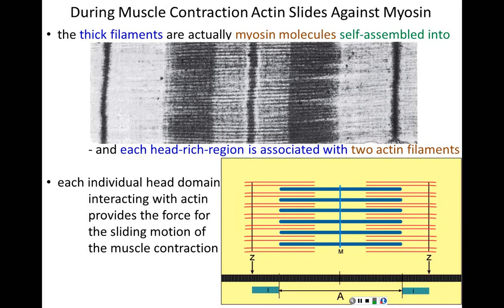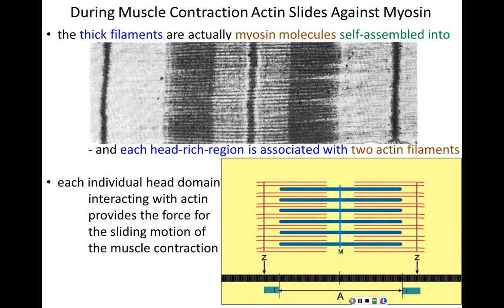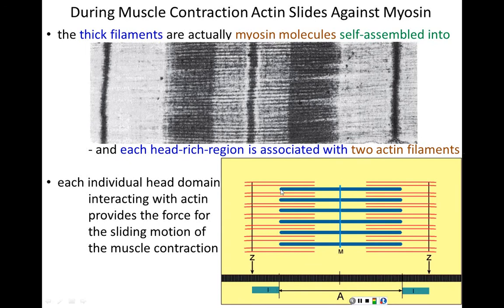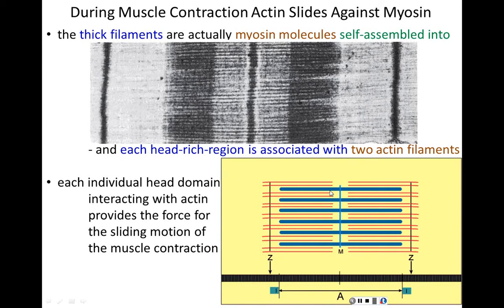This is exactly what's happening. We have the thick myosin filaments in the center, the actin filaments in red. As those myosin heads bind to actin and pull, bind to actin and pull, bind to actin and pull, those actin filaments are being pulled towards the center of the sarcomere, and the width of the sarcomere decreases. That is the muscle contraction.